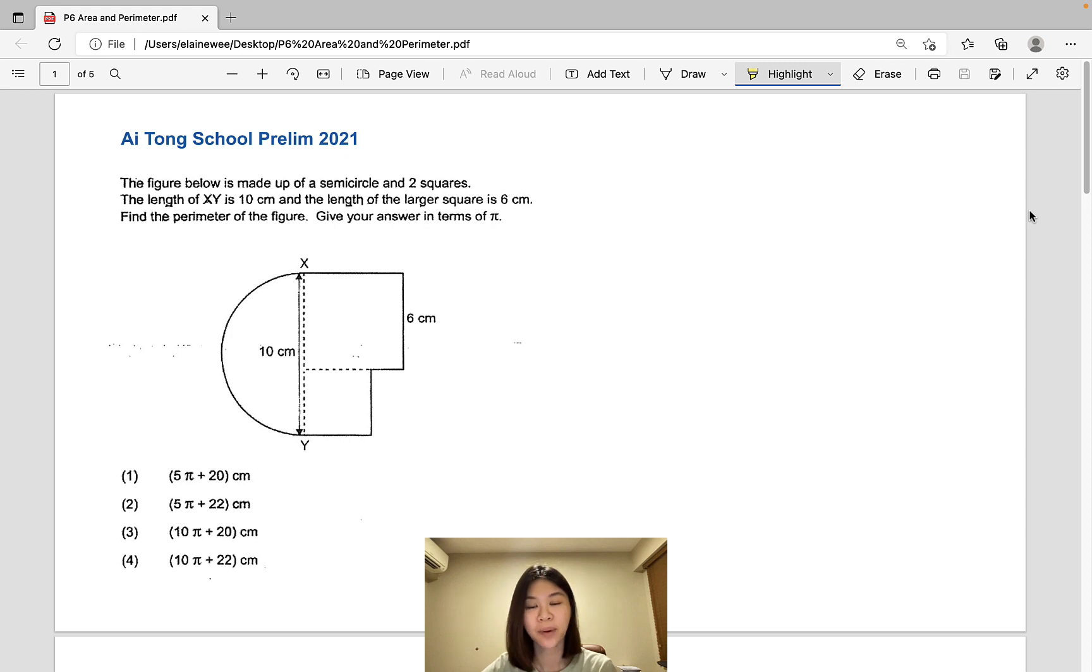Now let's take a look at the first question from Aitong School. The figure below is made up of a semicircle and two squares. The length of XY is 10 cm and the length of the larger square is 6 cm. Find the perimeter of the figure and give your answer in terms of pi.